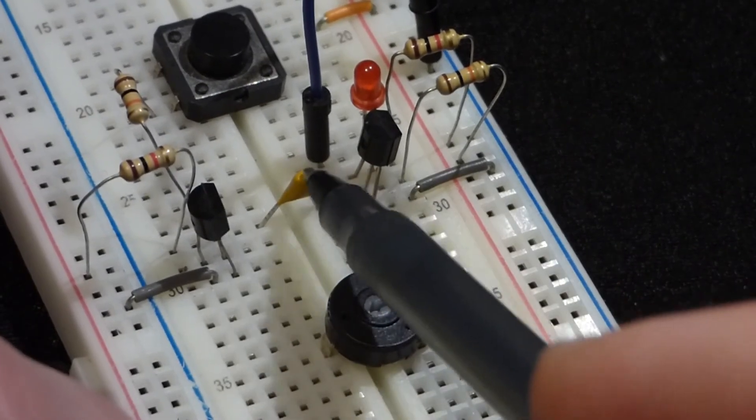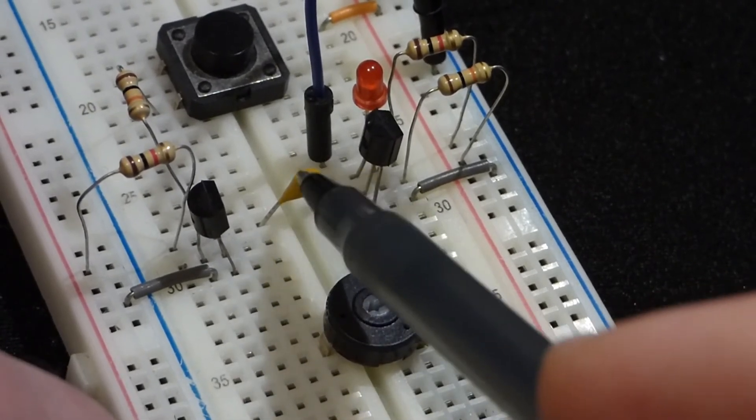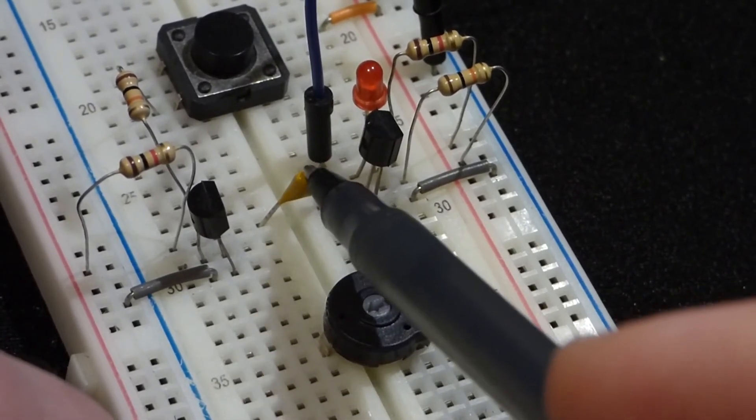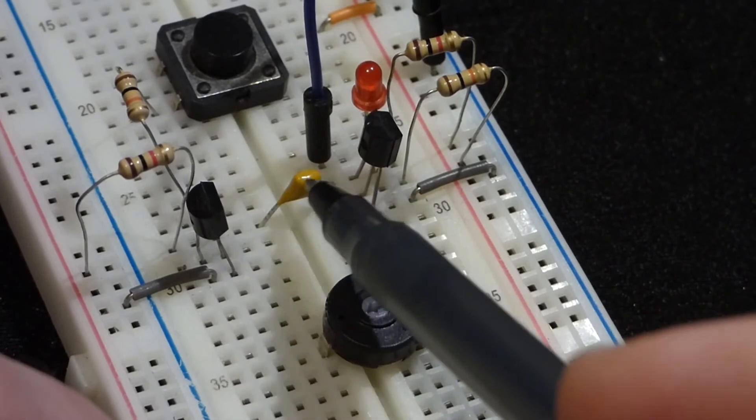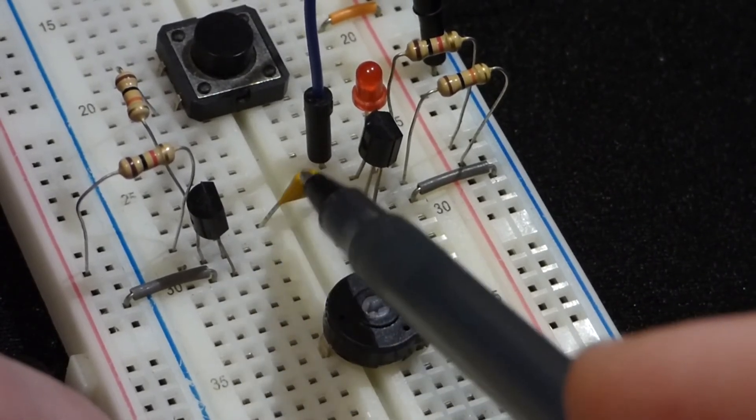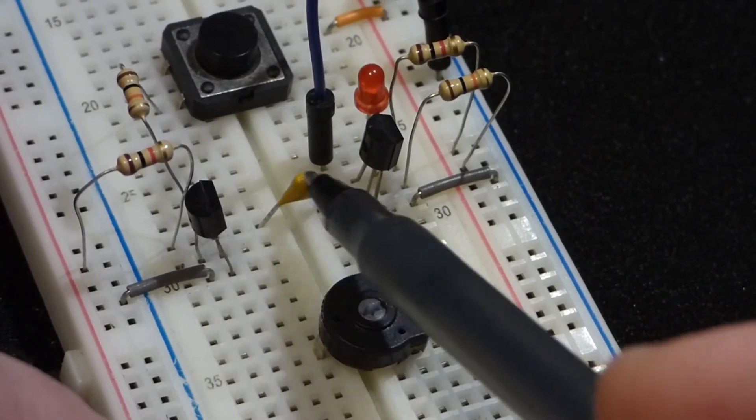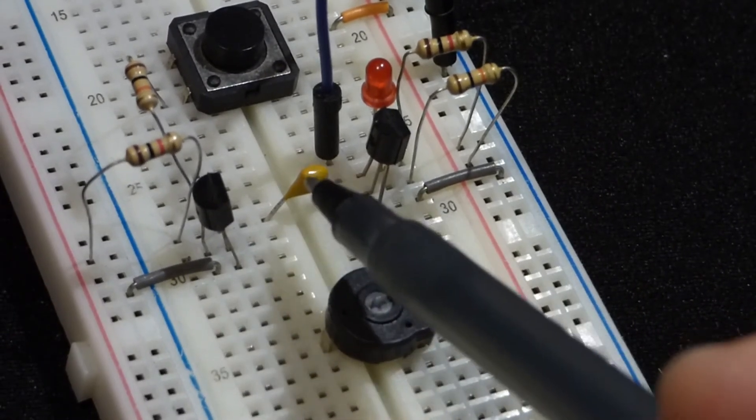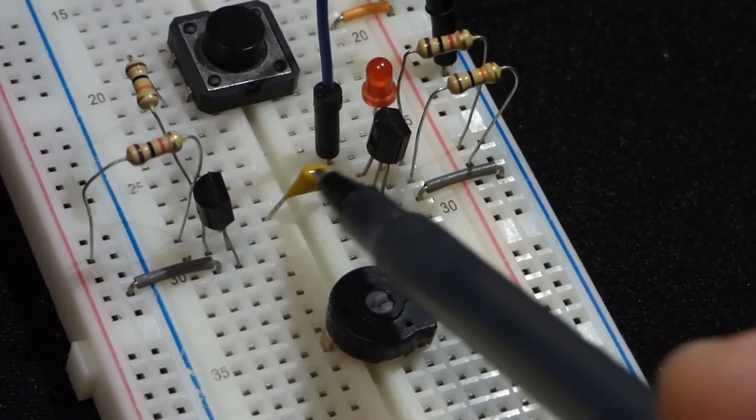But once the capacitor charges fully, that will stop. It doesn't pass direct current. It only passes changes in voltage and ultimately current. And then so you'll just get a brief, basically a pulse, a brief change of voltage that turns this transistor off and allows the LED to conduct.